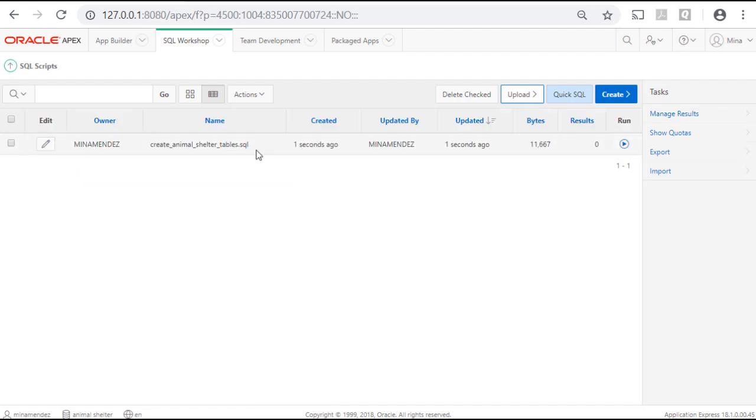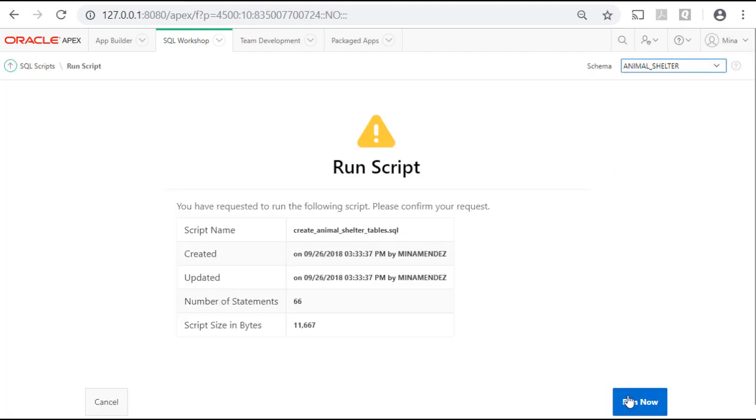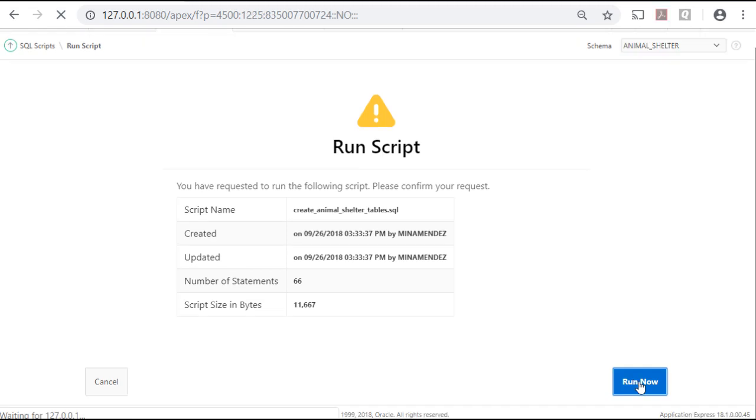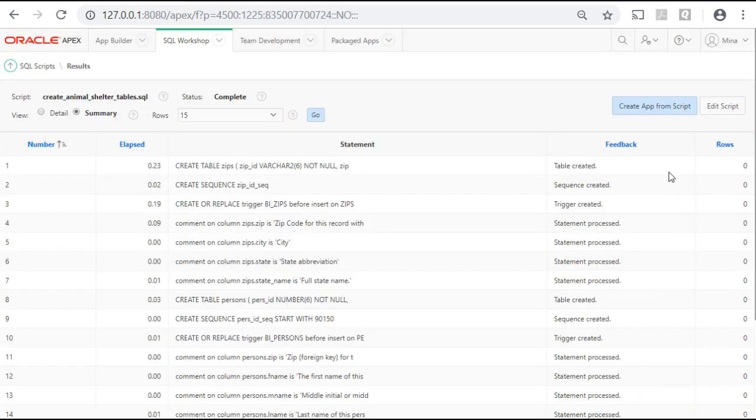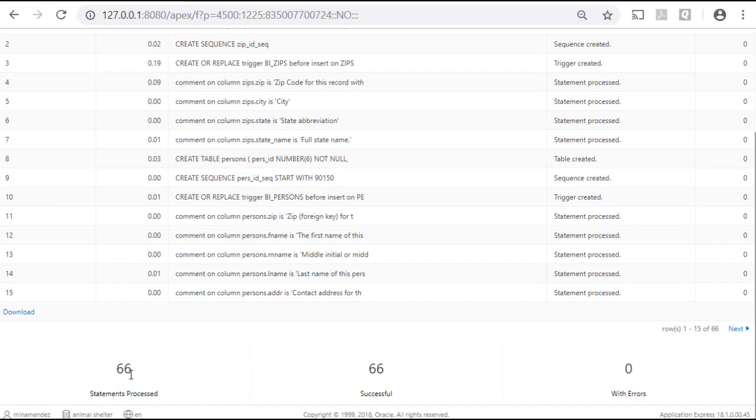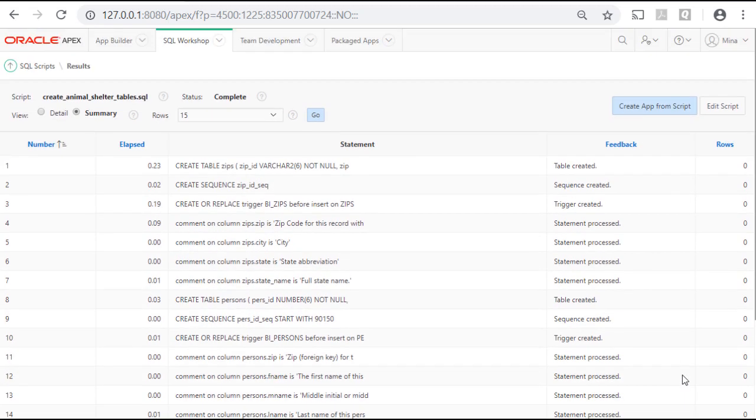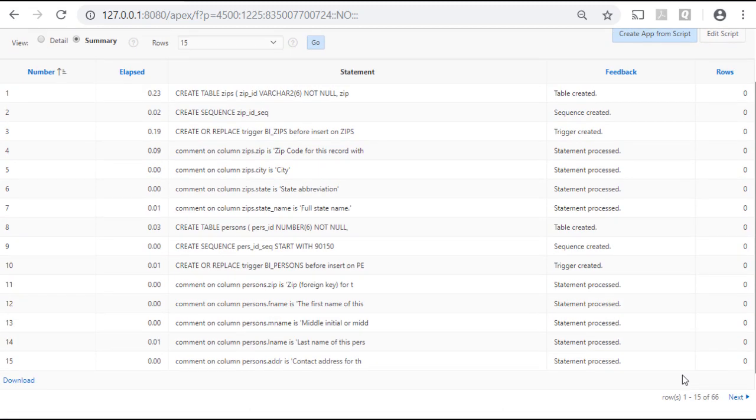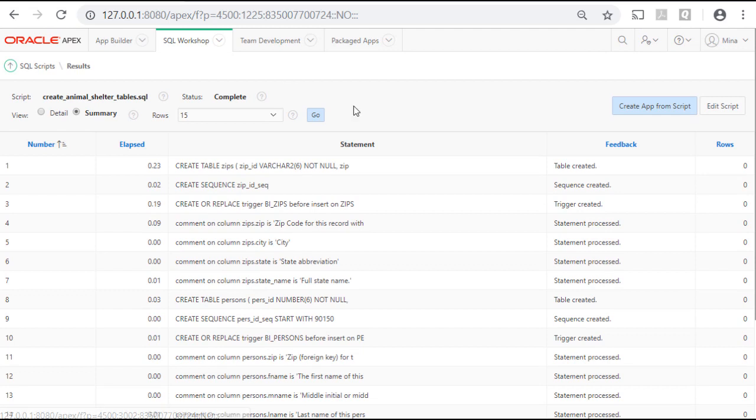So I'll double click on that and then I will click on upload. When it's uploaded we see it here. Nothing has happened in terms of creating those tables yet. To create the tables we have to come over to run and click that. And run now. And then scroll down and look at 66 statements processed, zero errors. That's kind of important. If you had any errors we would have to figure out what the problem is.